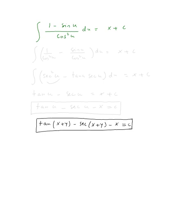Well, what would this be? This would be the integral one over cosine squared, let me do it in two steps, minus sine u over cosine squared u, du. Now, this is going to be secant squared of u minus sine over cosine is tangent of u times one over cosine is secant of u. Then all this du equal x plus c.